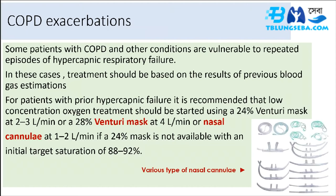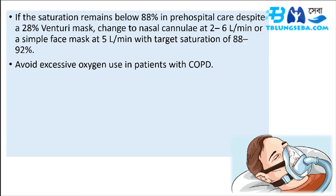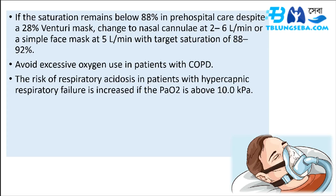If saturation remains below 88% in pre-hospital care despite a 28% Venturi mask, change to nasal cannulae at 2 to 6 L/min or a simple face mask at 5 L/min with a target saturation of 88 to 92%. Avoid excessive oxygen use in patients with COPD. The risk of respiratory acidosis in patients with hypercapnic respiratory failure is increased if PaO2 is above 10.0 kilopascals.